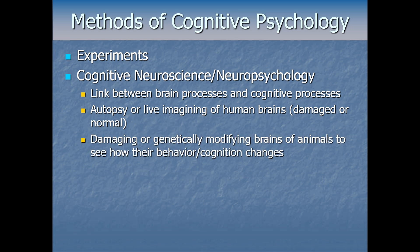We can also get more invasive by using animal models, either through damaging or genetically modifying the brains of animals to see how their behavior and cognition changes. This is the overlap between cognitive neuroscience and behavioral neuroscience. But most cognitive psychologists who study the brain do it with human participants rather than non-human animals, so most of what we'll see will be cognitive neuroscience or neuropsychology case studies.